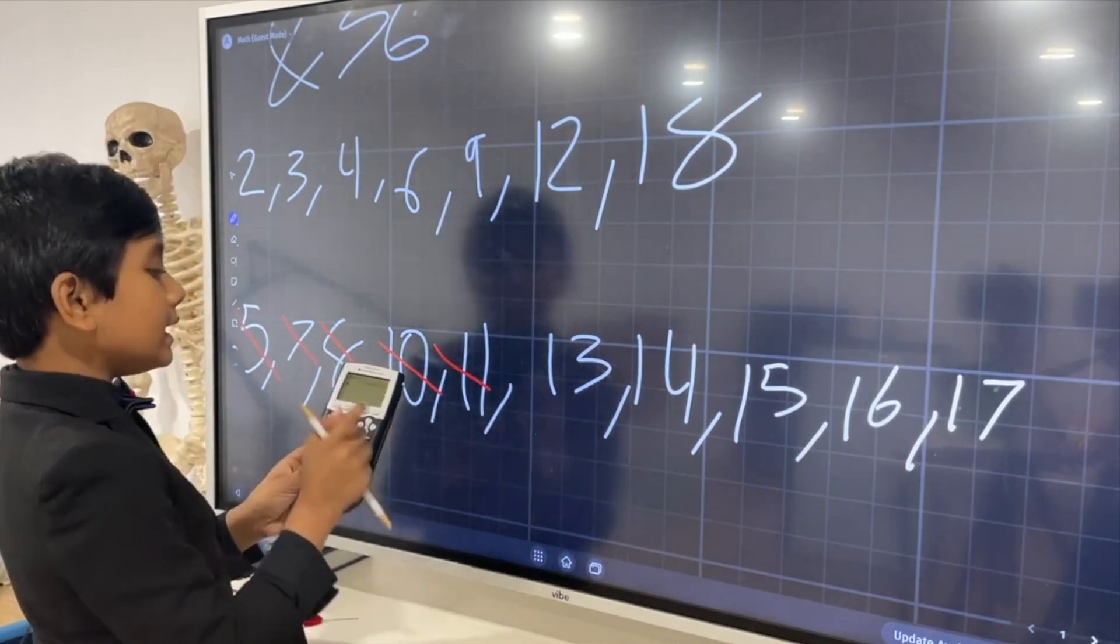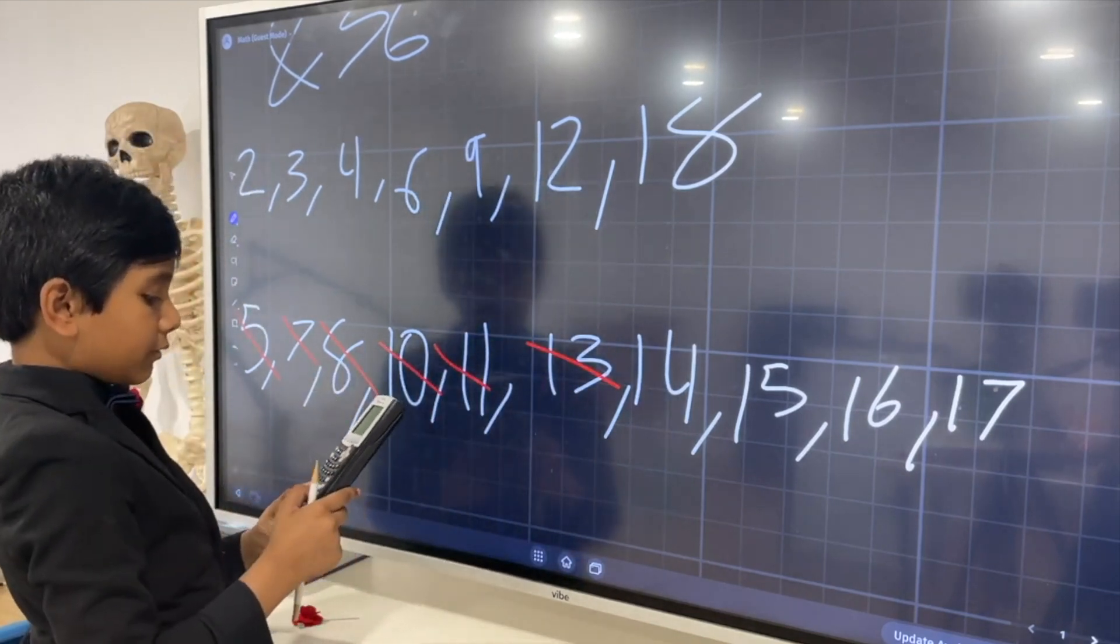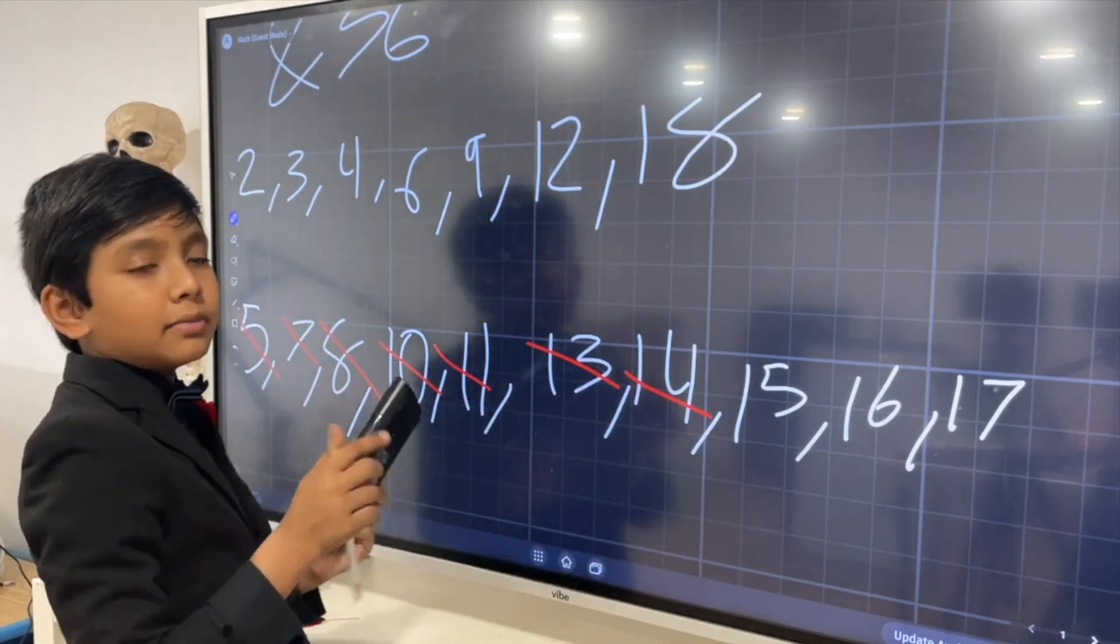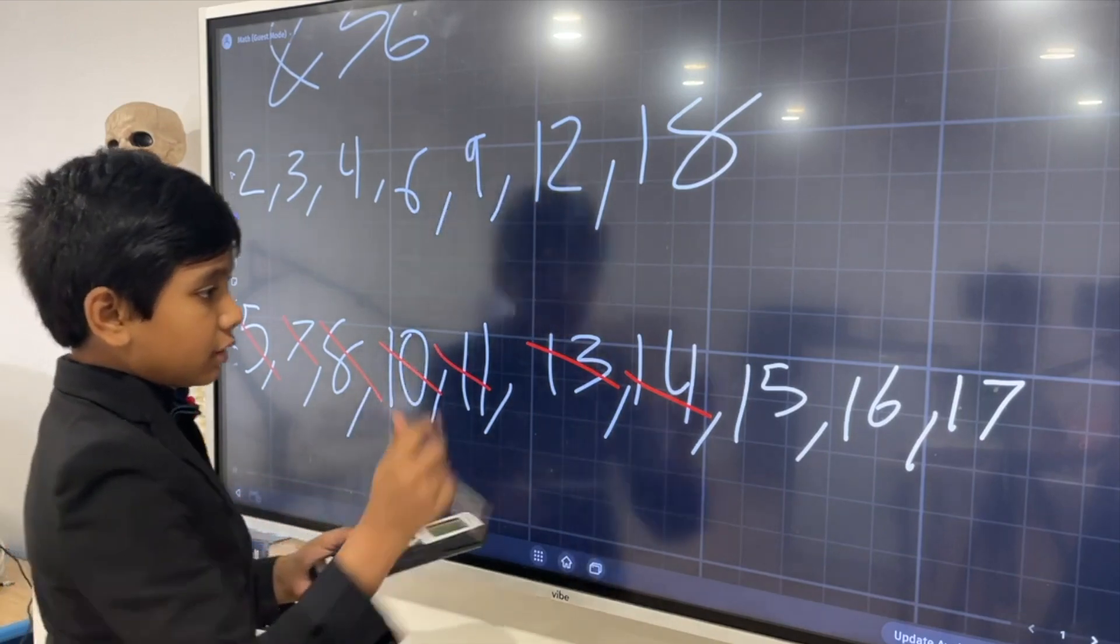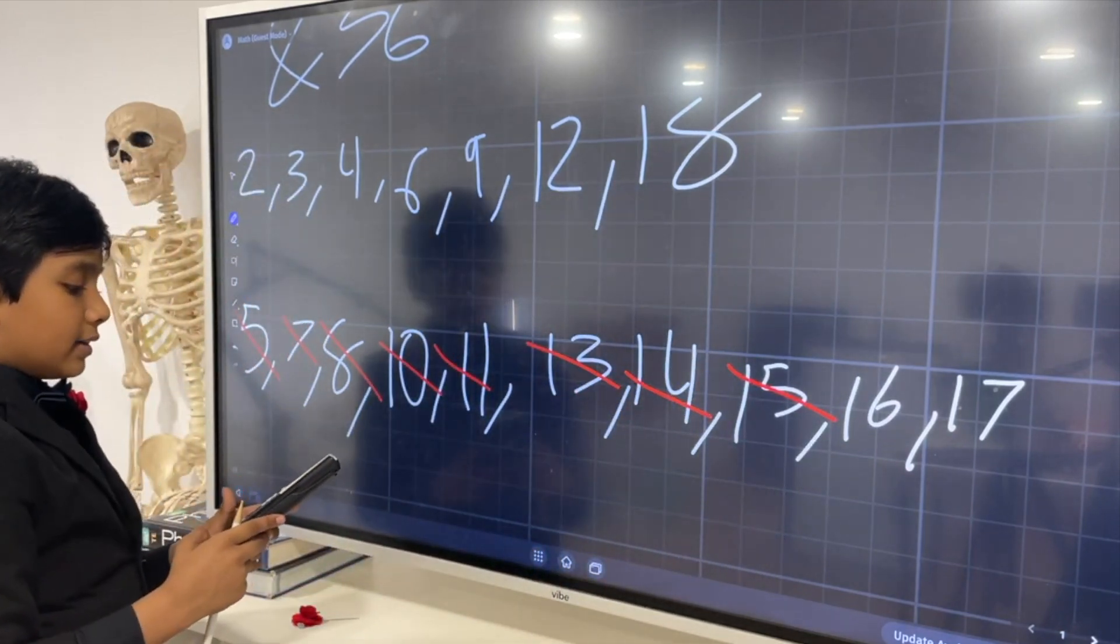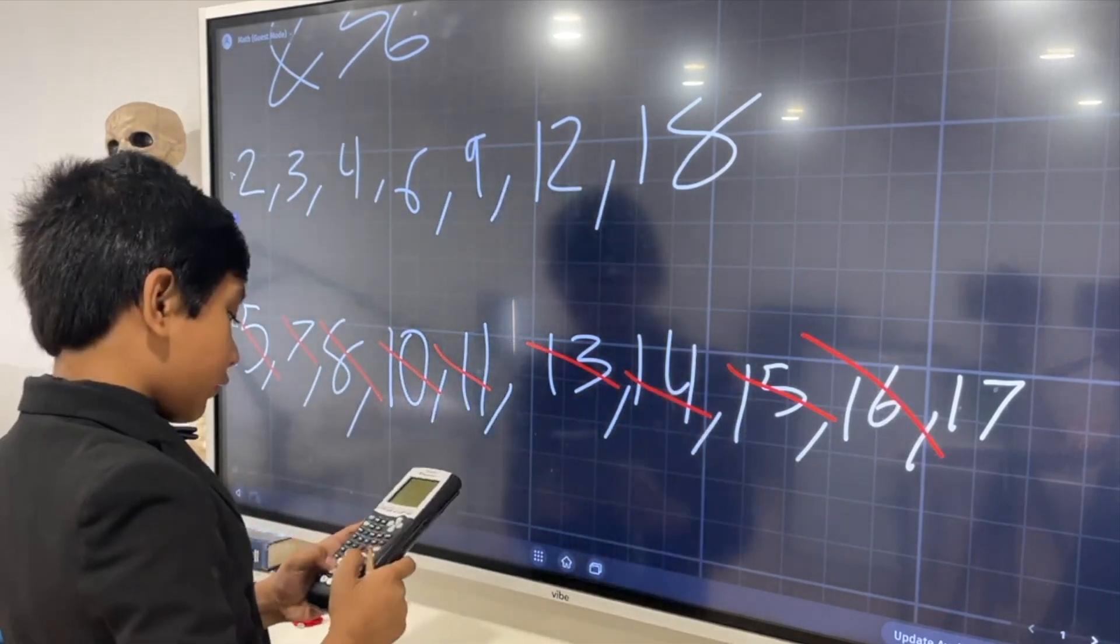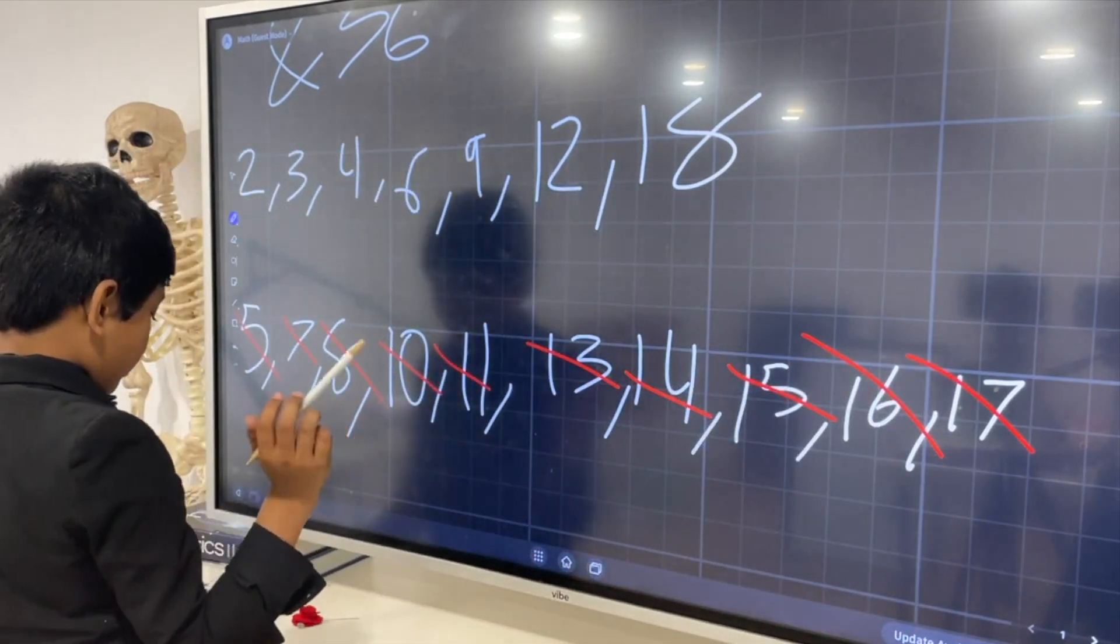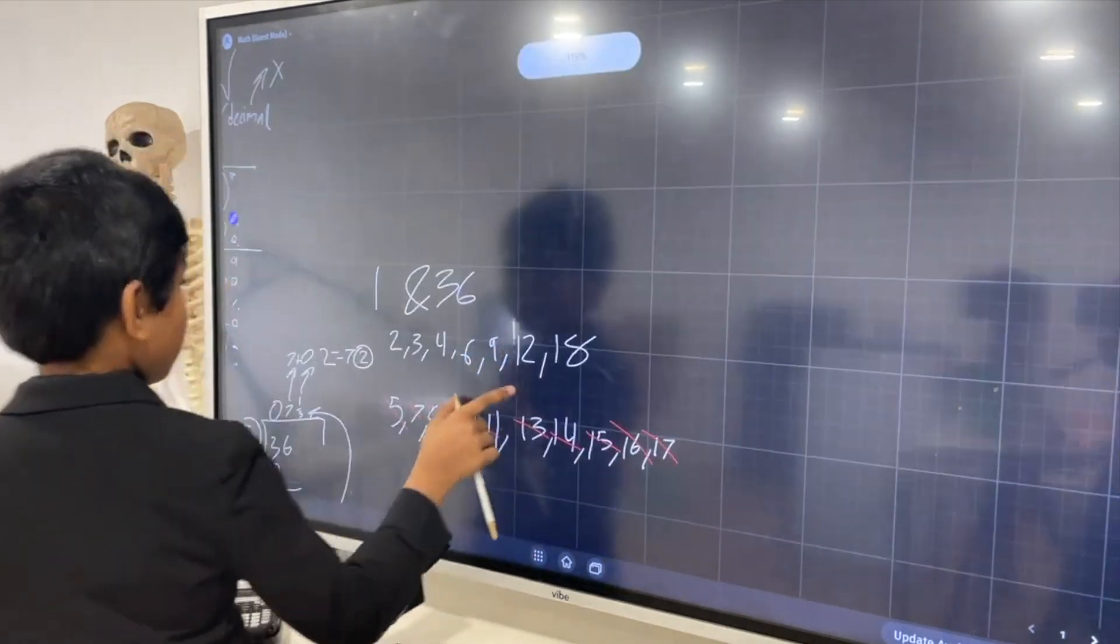Then we have 36 divided by 13, which is also out of the game, with 2.769. Then we have 36 divided by 14, which is also out of the game, with 2.5714. Then we have 36 over 15, which, with 2.4, is also out of the game. Wow, we're really eliminating contestants today. 36 over 16 is 2.25. And 36 over 17 is, as you guessed, also out of the game, with 2.11764. So, it looks like we've eliminated all of our contestants.